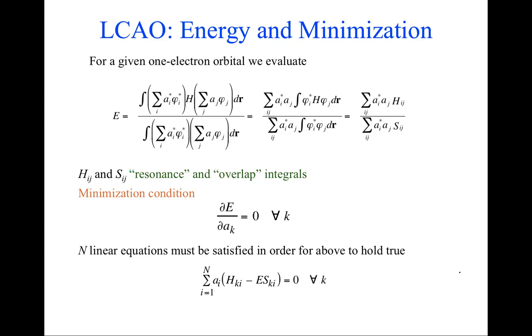What I want to look at next is the minimization process. If I have a one-electron orbital, I come back to the energy expression: how do I evaluate the energy of an electron in that orbital? I take the expectation value of the Hamiltonian, and now I've replaced ϕ by its sum. This is on the complex conjugate side. I sum over my basis functions, complex conjugate of the coefficient, complex conjugate of my atomic orbital.